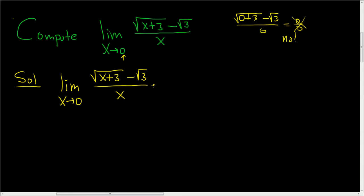To rationalize the numerator, we'll multiply by the so-called conjugate. So we multiply by the square root of x plus 3 plus the square root of 3, and then we divide by the exact same thing. And this is really equal to 1, right? So everything here is good. We're not doing anything bad.